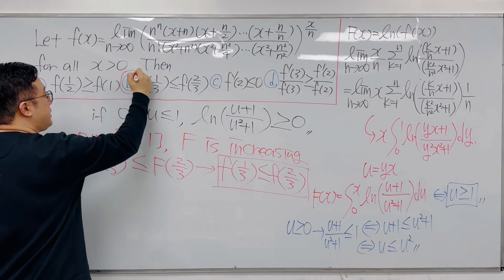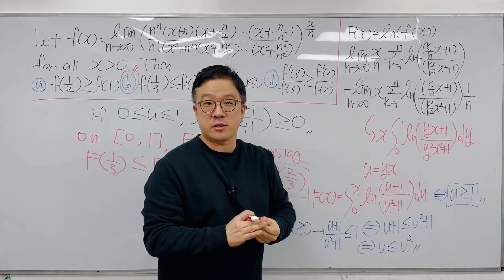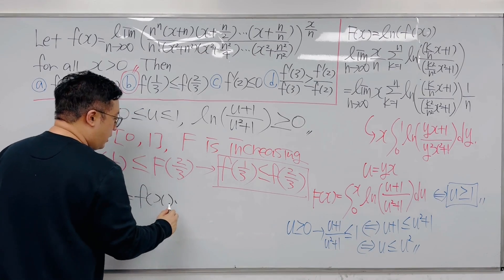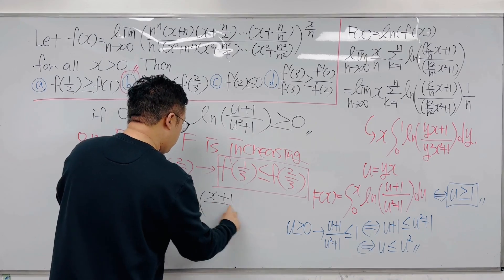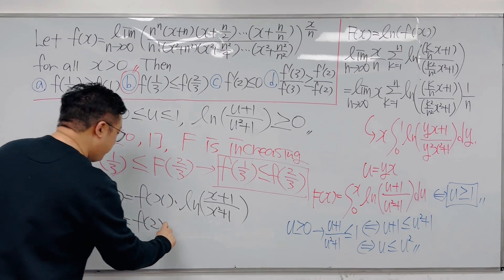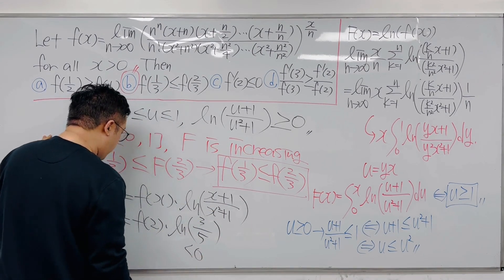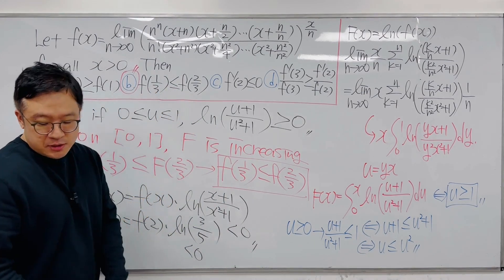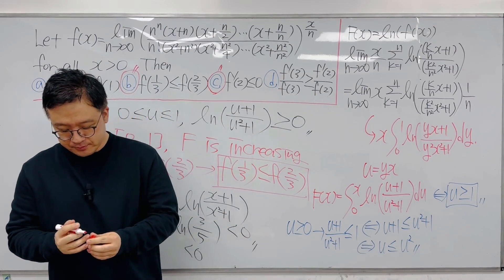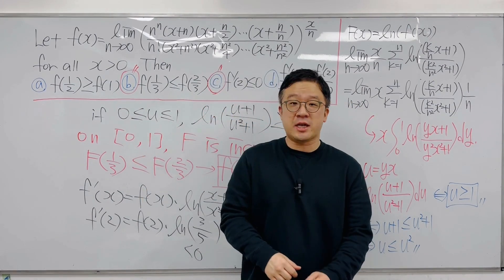Option B is the answer. But we also need to check option C. Since capital F of x = ln f(x), we get f'(x) = f(x) · ln[(x + 1)/(x² + 1)]. So f'(2) = f(2) — which is positive — times ln(3/5). Since ln(3/5) is negative, f'(2) is negative. So option C is also an answer. The final answer is options B and C. This viewer-suggested limit question from G Advanced Mathematics 2016 is pretty interesting — I'll be back with more questions like this soon.